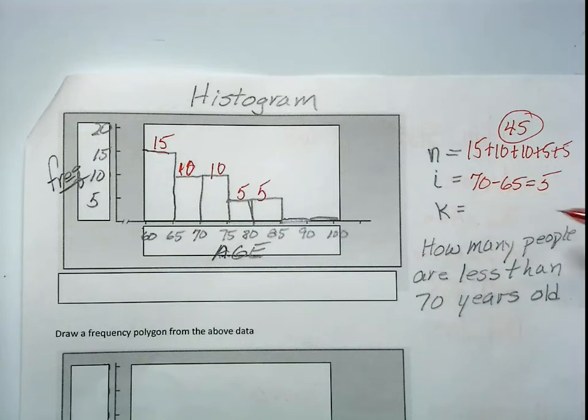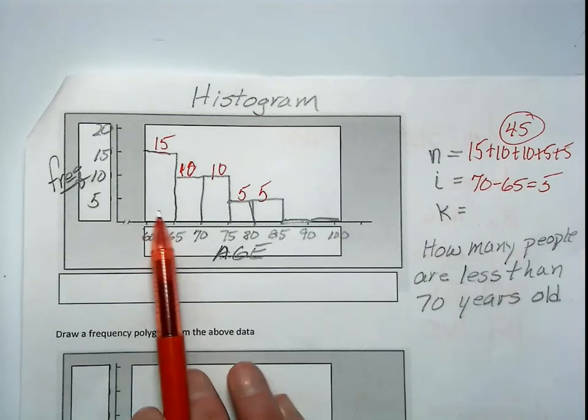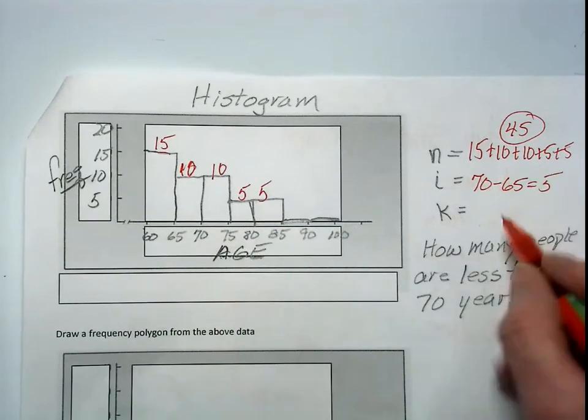Another variable I'd like to go over is K. K is the number of classes with data. Again, when we have the raw data, we calculate K. You have it on your formula sheet and in your textbook. However, if I just give you a histogram, you can count the number of classes. There are one, two, three, four, five classes in this case.